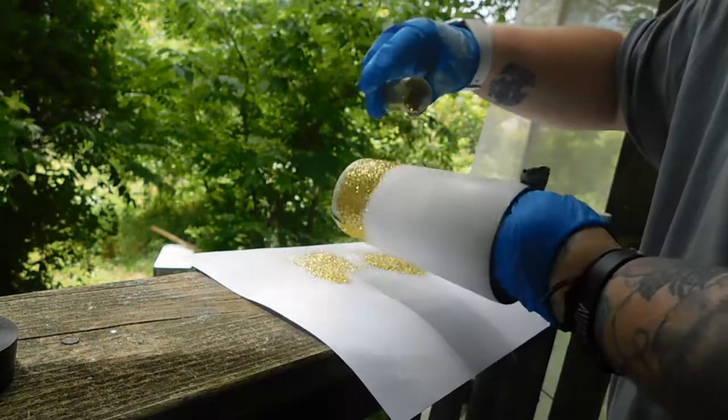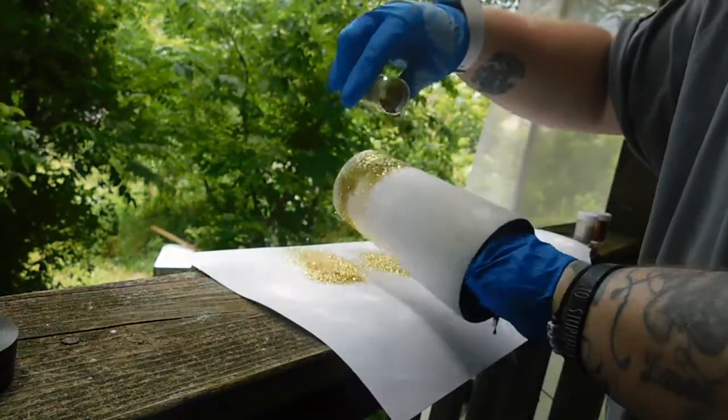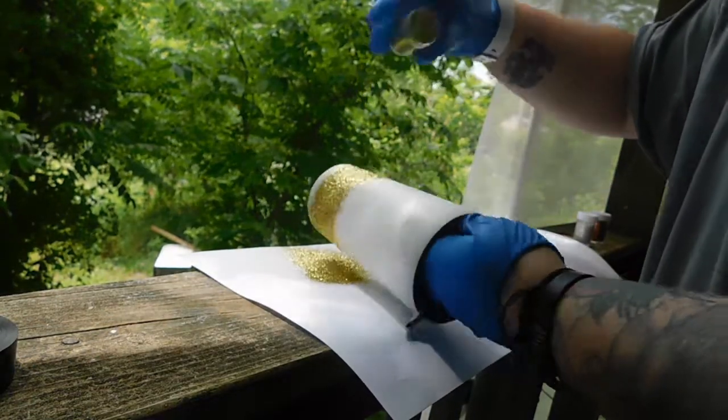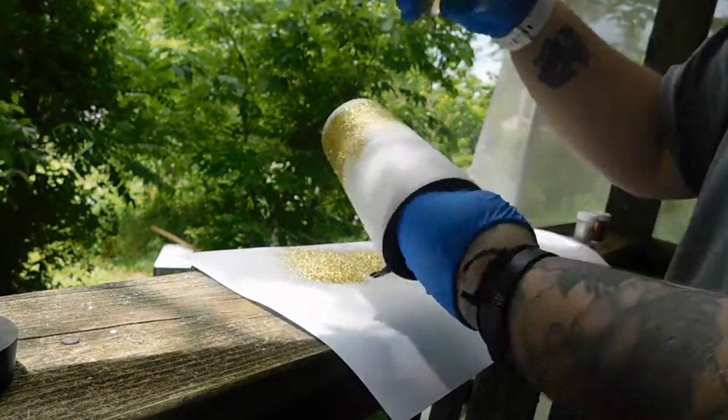So here you see me pouring the gold glitter onto the cup, and I'm gonna make sure that I really pack it on there, make sure that there's not really any open spots. You're gonna see me go up a little bit further so I can sprinkle a little bit of glitter, and it makes it an ombre color when I mix it with orange.